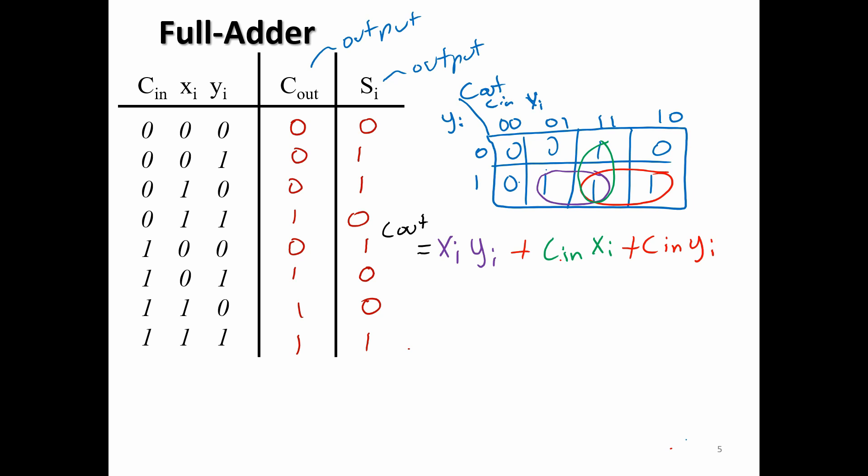What about the sum? 0, 1, 1, 0. 0, 1, 1, 0. 1, 0, 0, 1. 1, 0, 0, 1. This is what we call XOR. So c in XOR yi XOR.